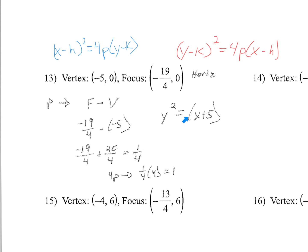Our equation has a 4p of 1, and we're using the horizontal form: (y − k)² = 4p(x − h). Since k is 0, it's just y² = 1 · (x − h). And h is −5, so it's y² = (x + 5). That is the equation from this information.